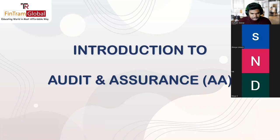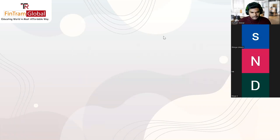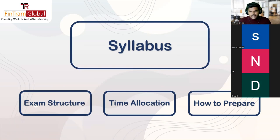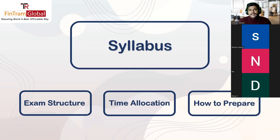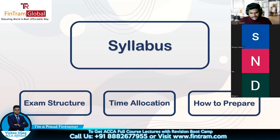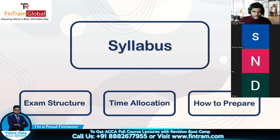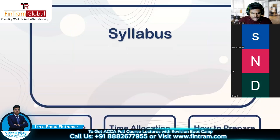Moving on — we'll be looking at four things primarily: first, the Audit and Assurance syllabus areas; second, the exam structure; third, time allocation, which is quite important for this paper; and finally, how to prepare. This framework is applicable for other skill-level as well as professional papers too.